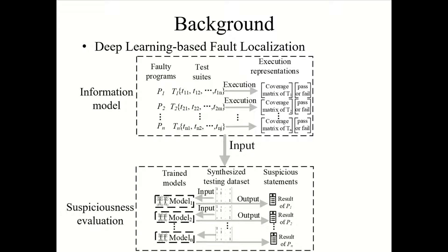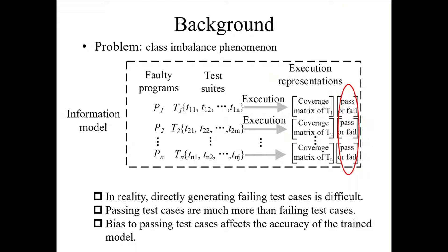Next, it uses neural networks with the matrix as the training dataset to run a trained model, and constructs a synthesized testing dataset — one-hot vectors — to test the model for evaluating the suspicious list of each statement. In this figure, passing test cases and failing test cases are two classes for training the localization model.